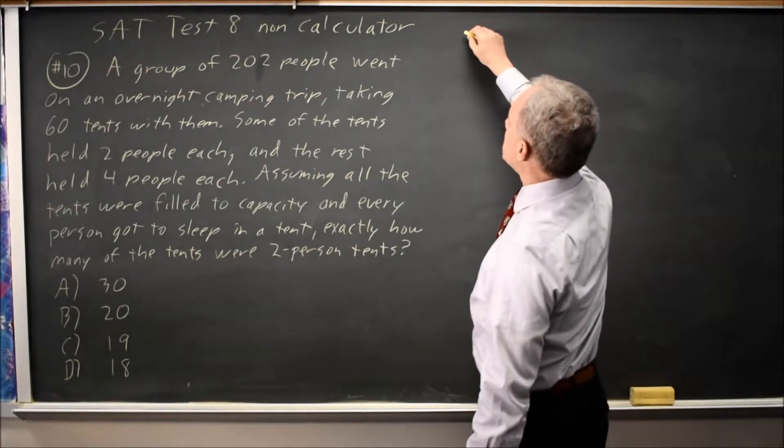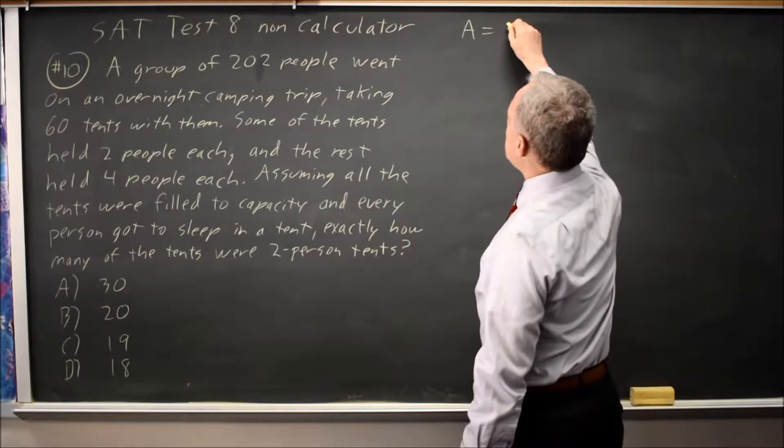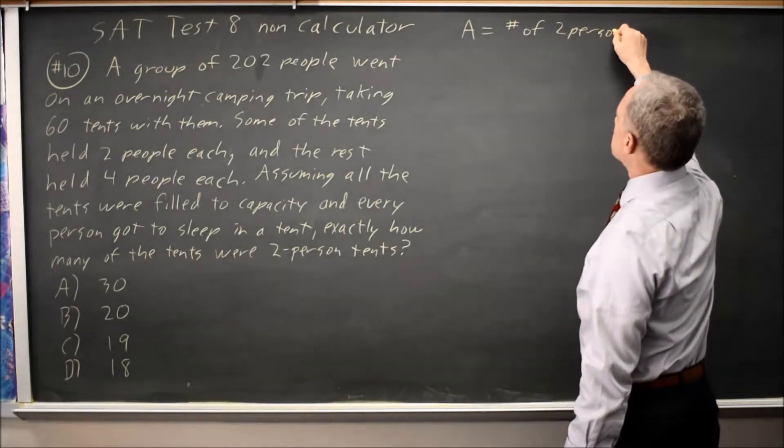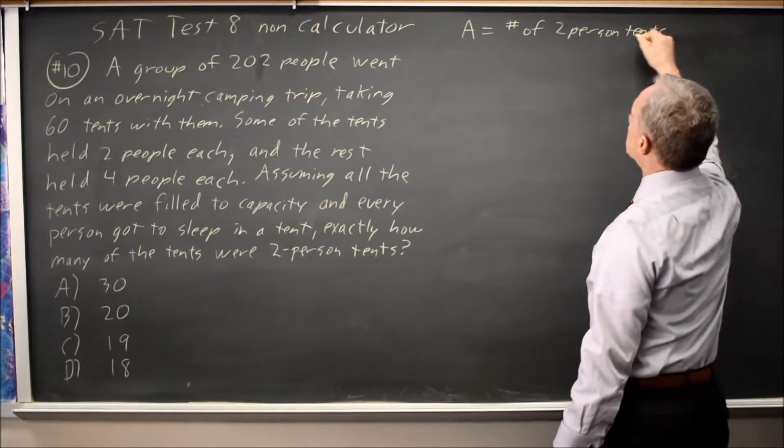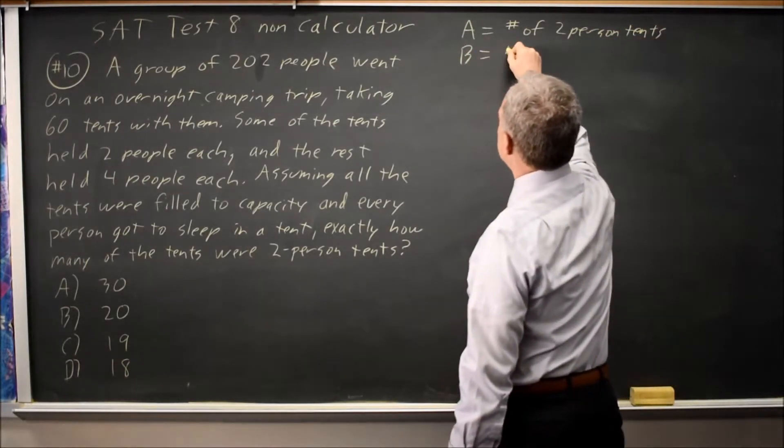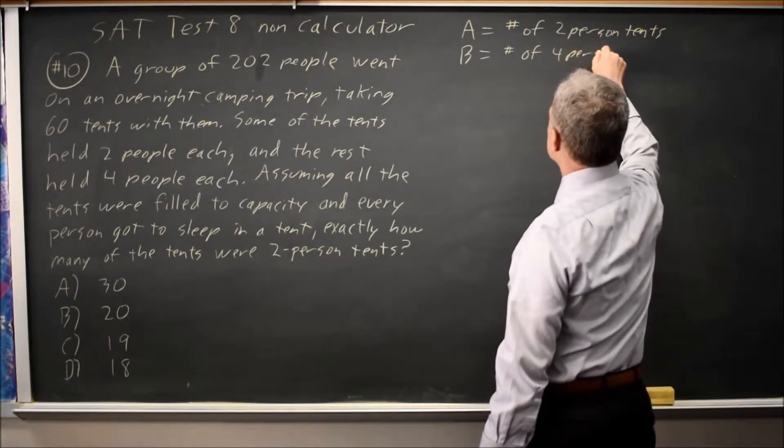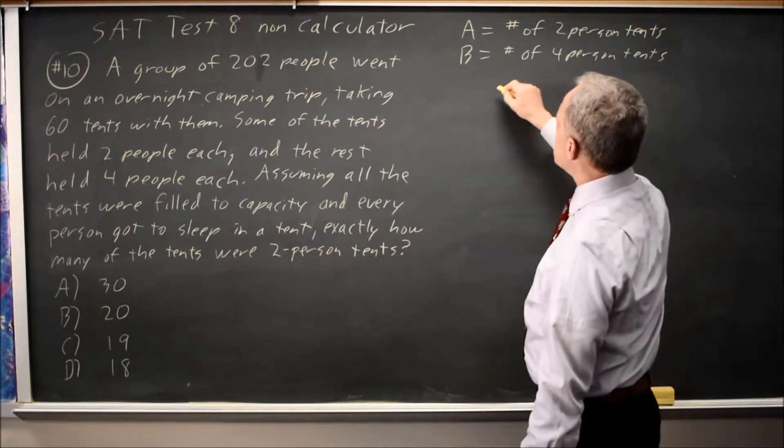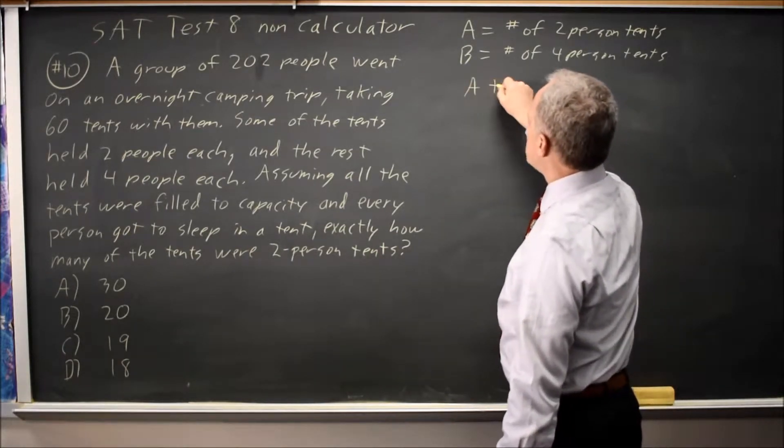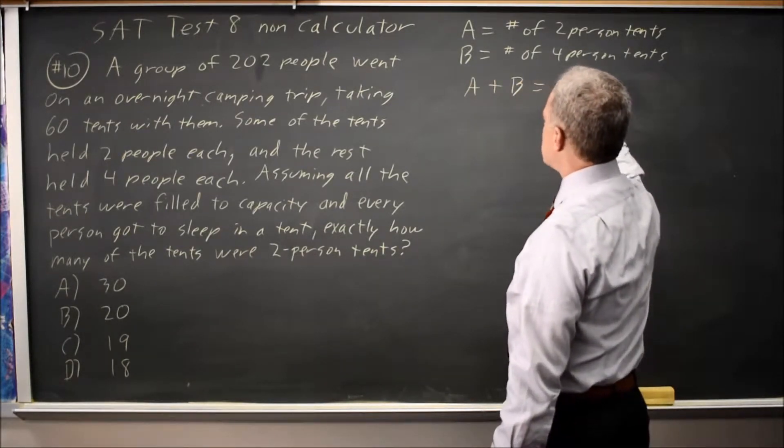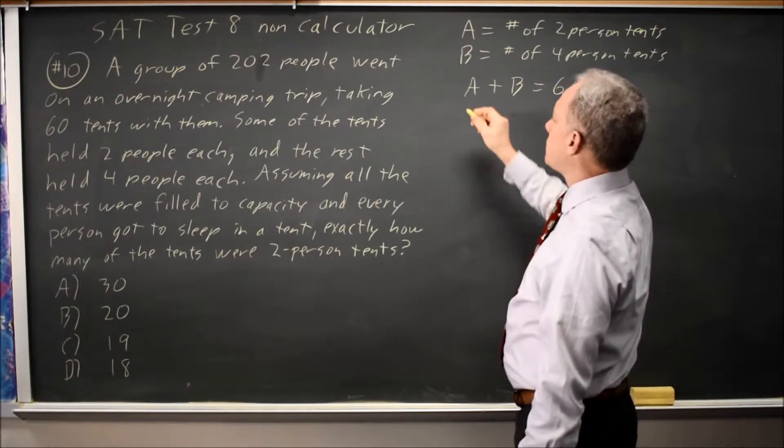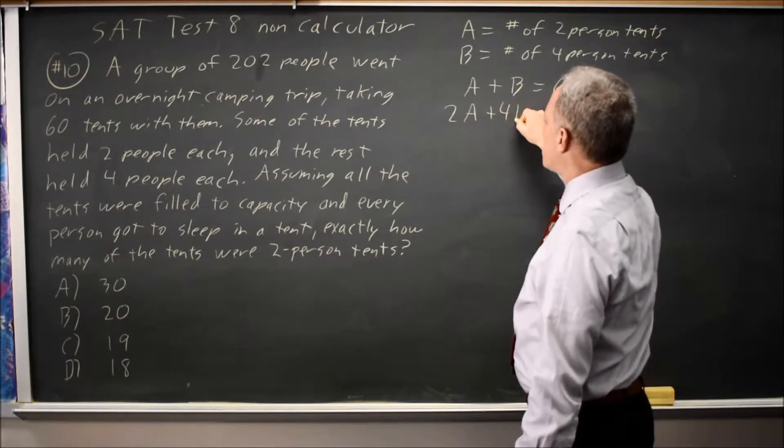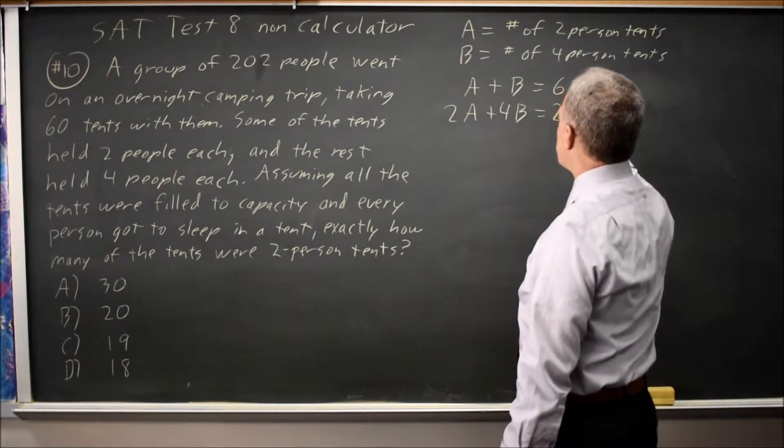So my first equation, let's define A equals number of two-person tents and B equals number of four-person tents. They said there are a total of 60 tents, so that's A plus B equals 60. They also said there's a total of 202 people, so twice the number of two-person tents plus four times the number of four-person tents equals the total number of people.